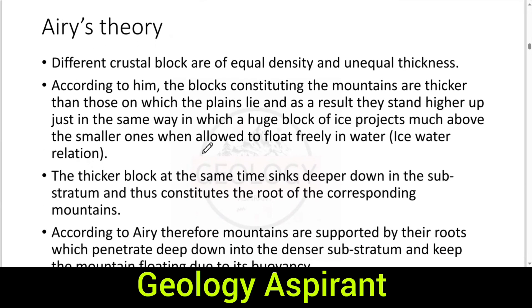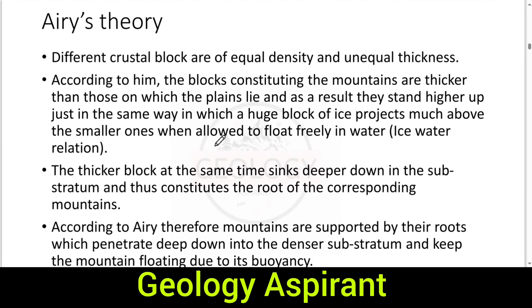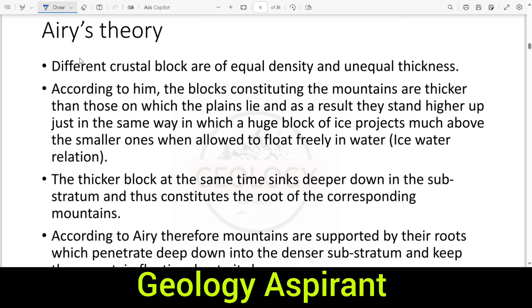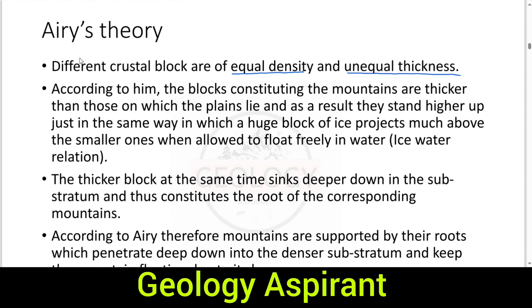Now let's come to Airy's theory. We have three theories: Airy, Pratt, and Hess-Cannon. Airy said that different crustal blocks are of equal density but unequal thickness. At that time this was a major discovery. So according to Airy, all crustal blocks have the same density but their thickness is different.